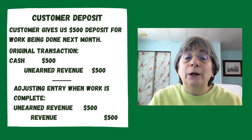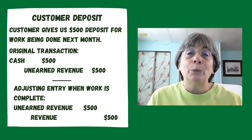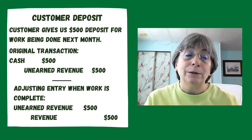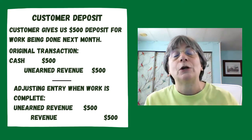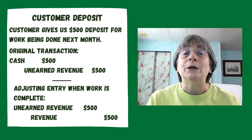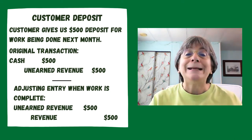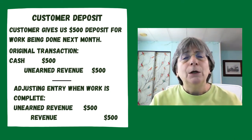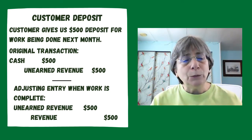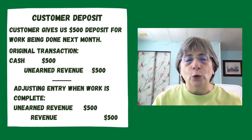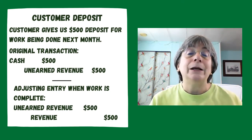In our first transaction, we receive $500 as a deposit from a customer for work that's going to be done next month. Question one: is it revenue-related or expense-related? We're going to get money, so it's revenue-related. Question two: did the cash come before or after? The cash came before we did the work — so this is a deferral. The original transaction: we would have debited cash and credited unearned revenue. Unearned revenue is a liability account — anytime you see 'unearned whatever,' it is a liability account.